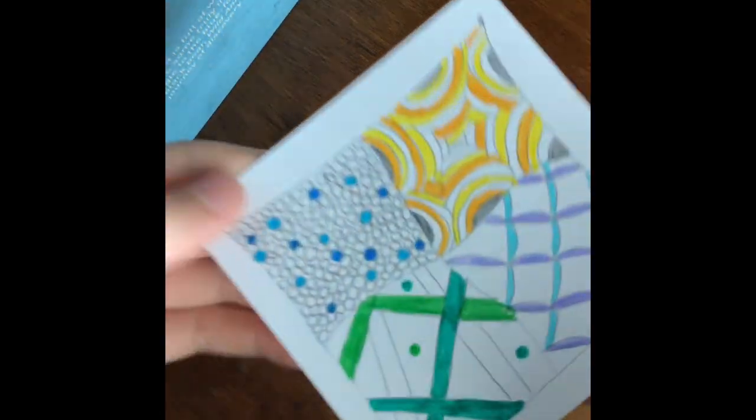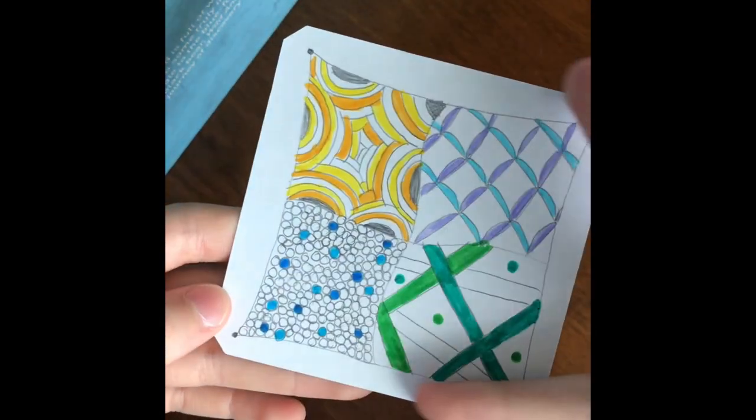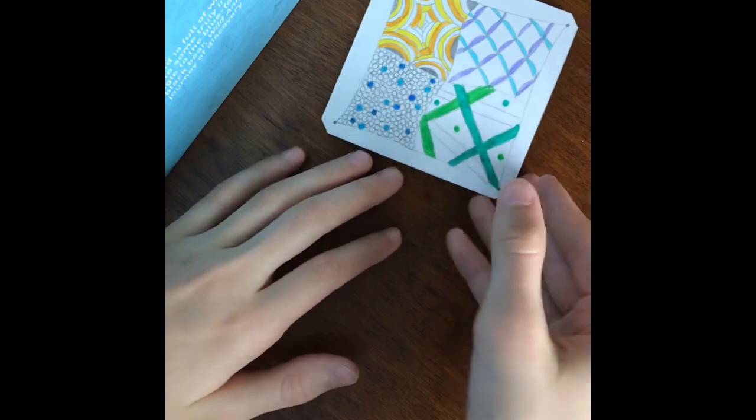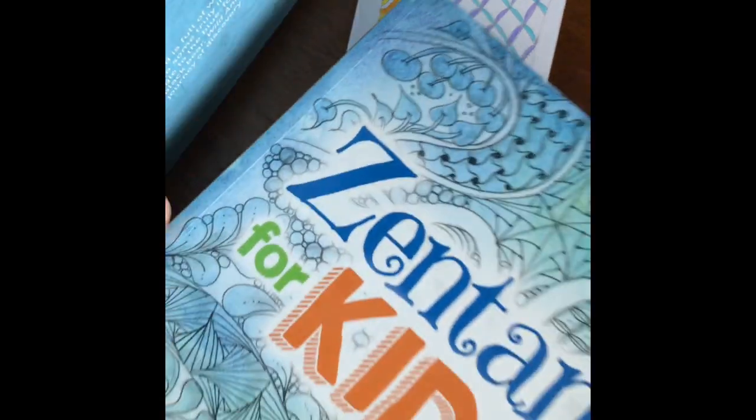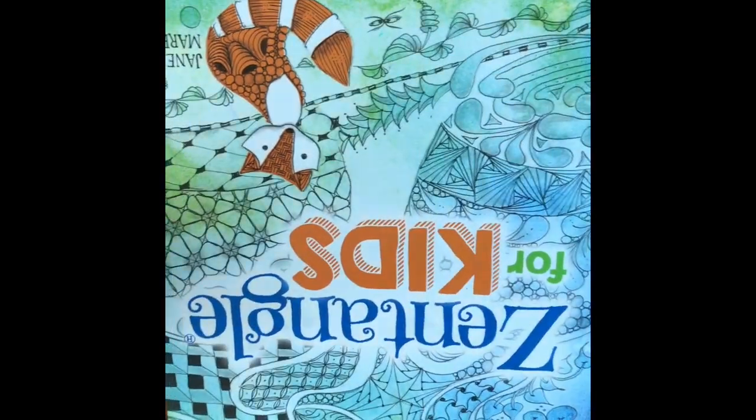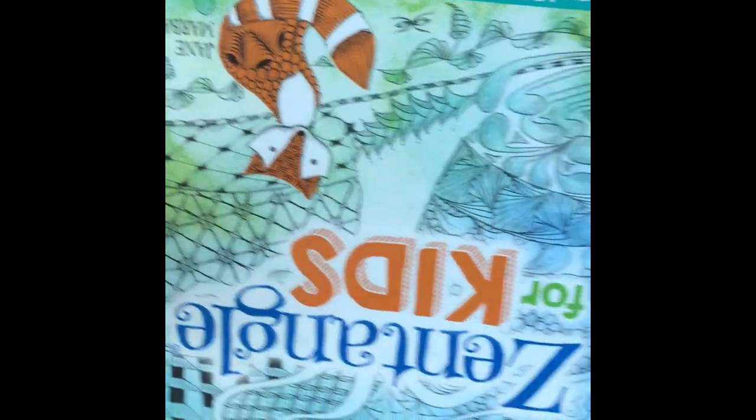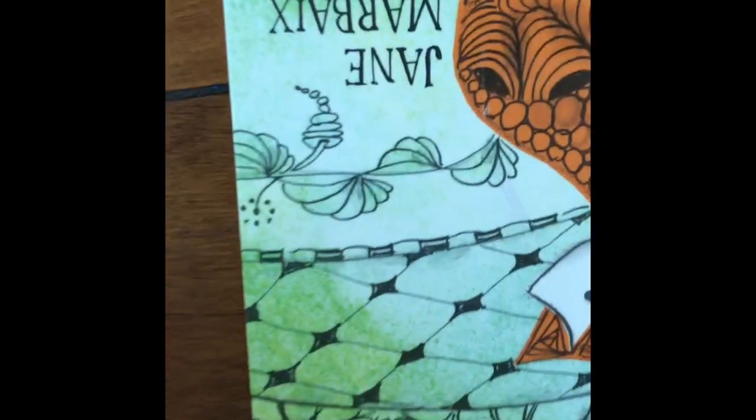Good job guys. You've made your very own Zentangle. If you want more Zentangle, I've learned this from this beautiful book right here. You can probably order it on Amazon. It's called Zentangle for Kids. It's by Jane Marbaix. Thank you for watching. I hope you enjoyed.